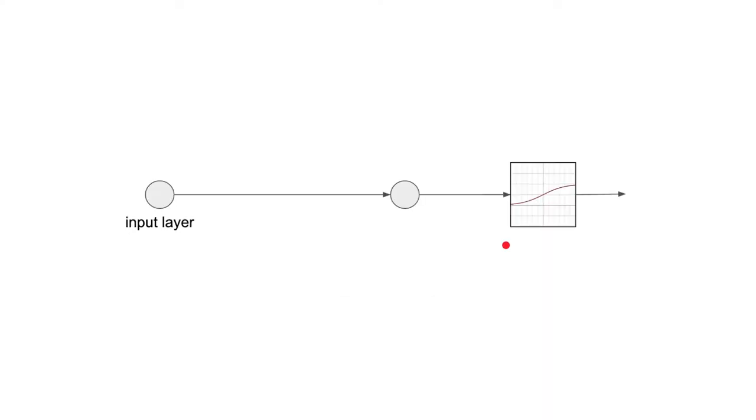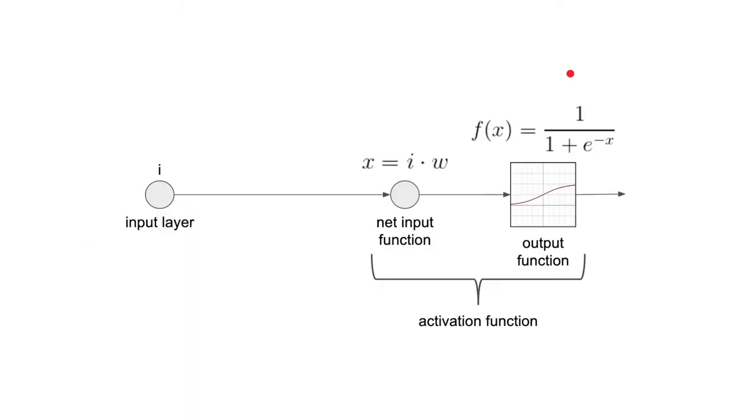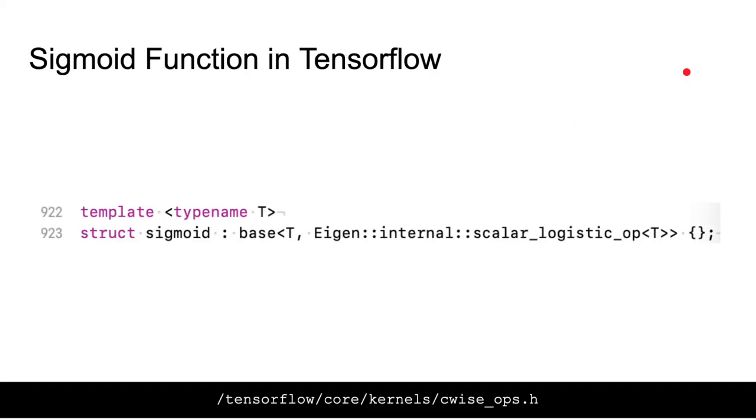All right, so we're going to be looking at a simple case with two neurons, two layers with one node each. And the input is simply the input times weight. So there is a weight applied to this connection here. And we apply this output activation. So ultimately, it becomes 1 divided by 1 plus e to the power of minus iw.